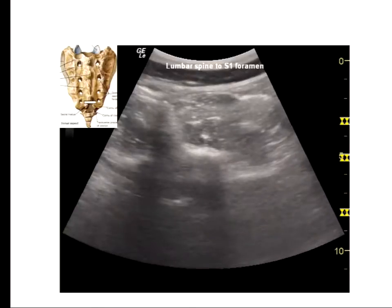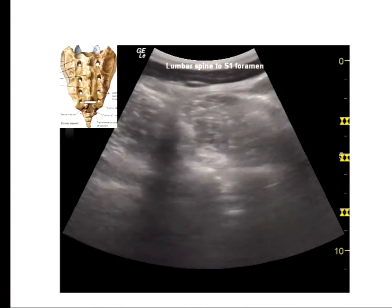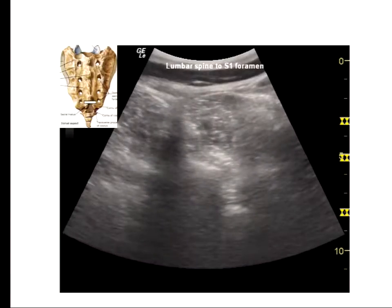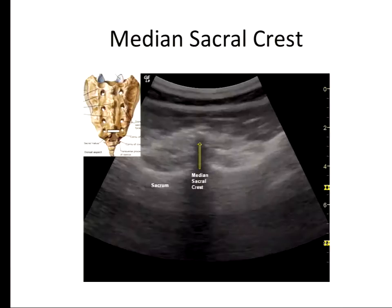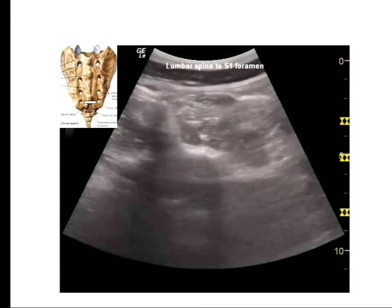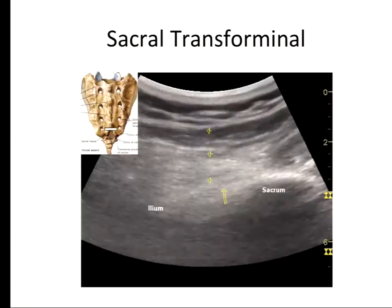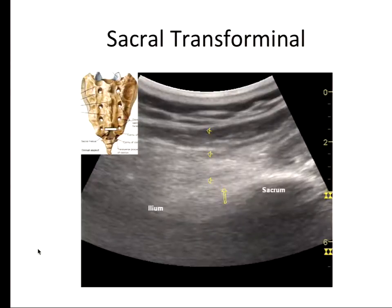Starting from the lumbar spine and moving down into the sacrum, there is a clear differentiation and you can see that the ultrasound waves actually go through the foramina — that's the S1 transforaminal. It is important to think about the medial crest and then move lateral, identifying the sacral transforaminal as a gap in the continuity of the hyperechoic line. In a typical Wisconsin patient, the resolution is likely to be poor because of adipose tissue.